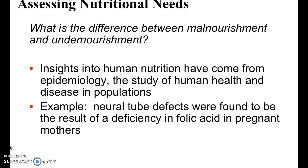We usually hear the words malnutrition and undernutrition thrown around — they don't really mean the same thing. A person can be obese and also malnourished. Malnourishment occurs when you are missing certain components in your diet, such as protein or iodine. If you have a steady diet of potatoes and rice, you could be obese but malnourished. Undernourishment is where your calorie intake is below what you need to sustain yourself. In most developing nations, we see a lot more problems with malnourishment than with undernourishment.